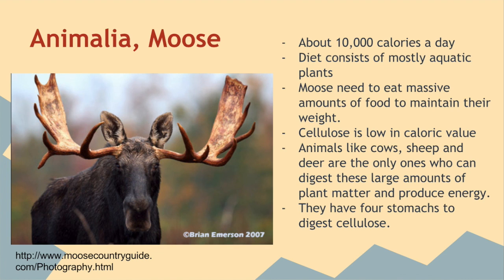A good example of animals getting energy from eating other things are moose. Moose have a diet of all plants, mostly aquatic, and they need to eat about 10,000 calories a day to maintain their weight. Cellulose is very low in caloric value, so the amount of plants they have to eat is very large. Other animals like cows, sheep, and deer also have diets like this, and what's necessary is four stomachs to digest the cellulose.